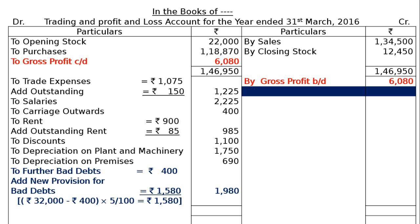We total the debit side, coming to rupees 10,355. Writing it on the credit side to find the net result: By Net Loss carried down — rupees 4,275. Regarding the manager's commission: the adjustment states the manager is entitled to 5 percent commission on net profit after charging his commission. Since we have incurred a loss and not a profit, the manager is considered inefficient and as per the terms of agreement, no commission is payable. When there is a loss, there is no commission.